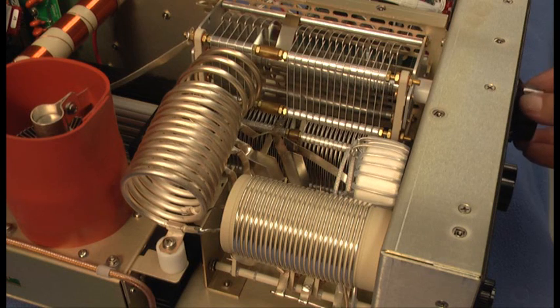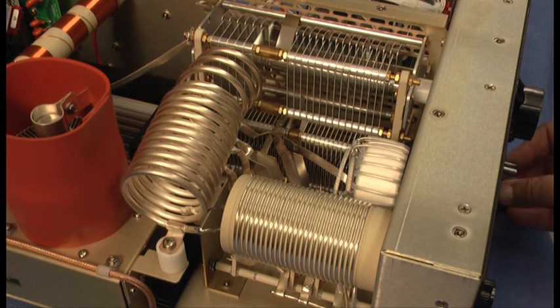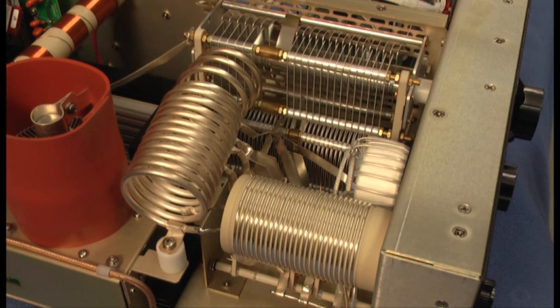When I adjust the tune control on the front panel, you can see the plates of the capacitor meshing in and out. And also for the load control, you can see the plates meshing to give you varying degrees of capacitance to tune the amplifier.